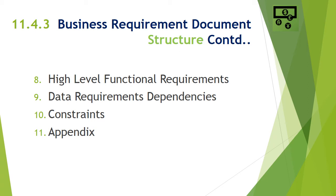It is also important to define the dependency on different data and data sources. Different data source owners need to be made aware of the current functionalities, data requirements, and the changes they may need to implement in their own systems. Any internal or external dependencies of the project need to be clearly defined, and the people responsible for these dependencies need to be made aware of their responsibilities. Any constraints which can affect the delivery or effectiveness of the project need to be clearly mentioned, and all relevant stakeholders should be made aware.